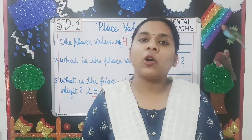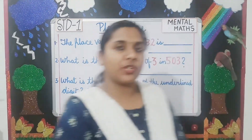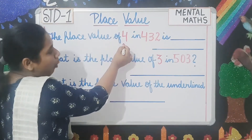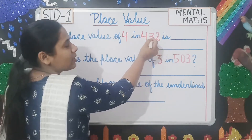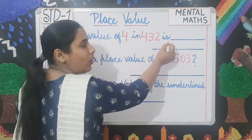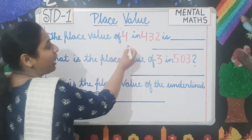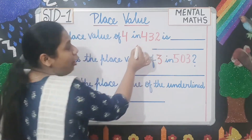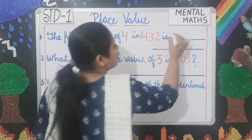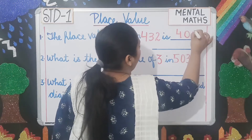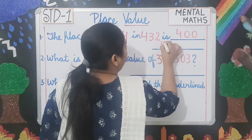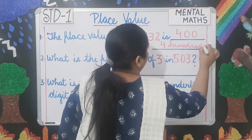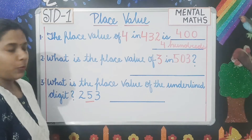Is it clear students? Let us see some questions. Number 1: the place value of 4 in 432 is — you have to write the place value of 4. The value of 4 here is 400. So you write 400 or you can write it as 4 hundreds. Both ways you can write.